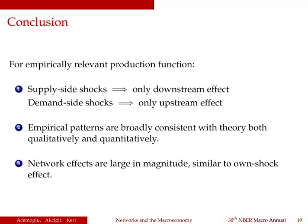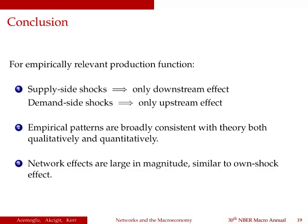In conclusion, there are three main takeaways. First, under a Cobb-Douglas production function, supply-side shocks have only downstream effects and no upstream effects, while demand-side shocks have only upstream effects and no downstream effects. Second, the empirical patterns are broadly consistent with theory, both qualitatively and quantitatively. Third, the network effects are at least as large as the own shocks in the data. Thank you very much.